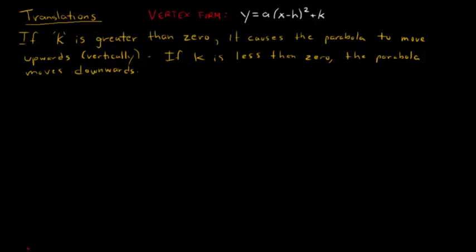There's a variety of ways to move a parabola around for a quadratic equation. We've talked about how 'a' can cause it to flip upside down or get wider or narrower. And those are what we call transformations. And the second thing we'll talk about is translations.